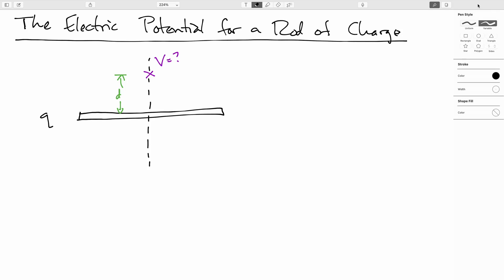Previously, we found a general expression for the electric potential for a dipole. Here, I would like to find the electric potential for a rod of charge, but this time I am going to restrict myself to just looking at from that point on the plane that's the perpendicular bisector to our rod.